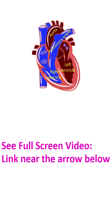The right ventricle is the right lower chamber of the heart which pumps blood to the lungs for oxygenation. The pulmonary artery is the blood vessel which takes blood to the lungs from the right ventricle.